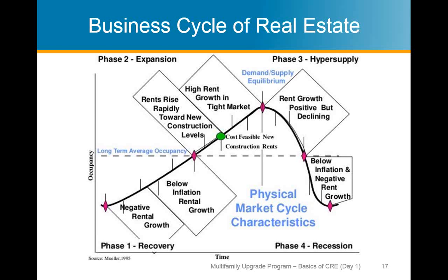When rents get high enough, it becomes cost-feasible for developers to build new buildings. That's part of why developers gain momentum at the tail end of recovery or beginning of expansion — projects that didn't pencil out at $1,000 per unit per month now make sense at $1,200 or $1,300 per month. Better access to capital and easier financing are also influencing factors that encourage developers to jump in at this point.